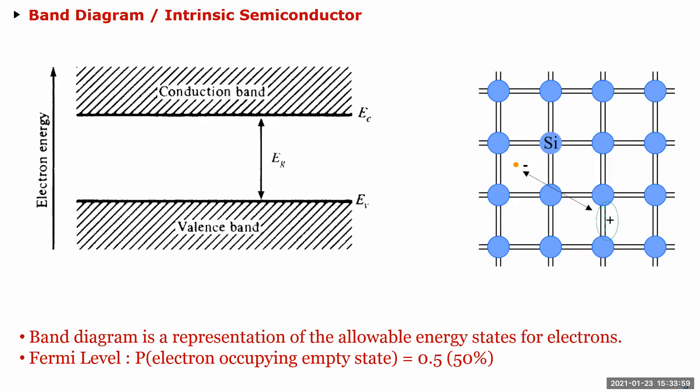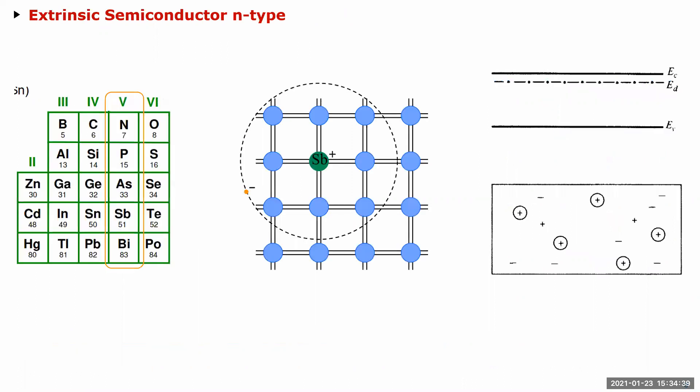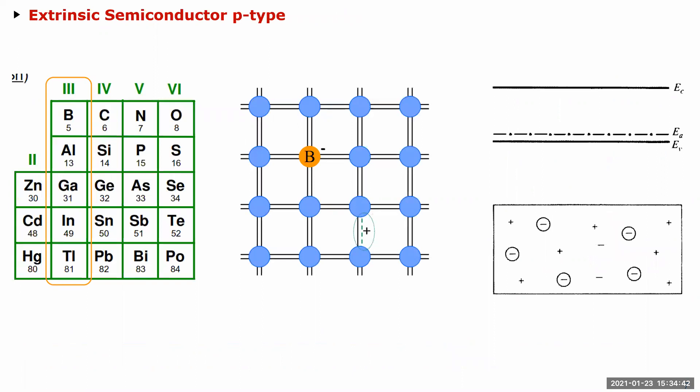When you dope with a Group V element, the Fermi level gets closer to Ec — that's n-type. If you dope with a Group III element, you have more holes and the Fermi level moves closer to the valence band — that's p-type. If the Fermi level is closer to Ev, conduction happens through holes; if it's closer to Ec, conduction happens through electrons.